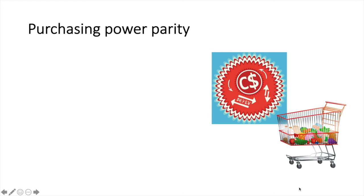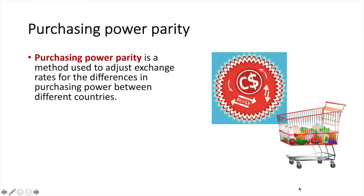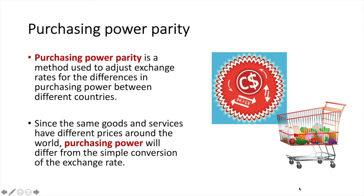Purchasing power parity is a method used to adjust exchange rates for the differences in purchasing power between nations. Since the same goods and services have different prices around the world, purchasing power will differ from the simple conversion of the exchange rate. In a moment, we will look at a sample market basket in the United States and then compare it to the same market basket in Canada using the given exchange rate.